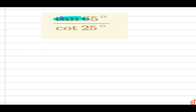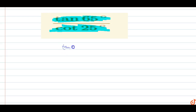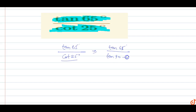In this problem, we have to find the value of cot(1065°) upon cot(25°). We can rewrite cot(25°) as cot(90° − 65°), which simplifies the expression to cot(1065°) upon cot(1065°).